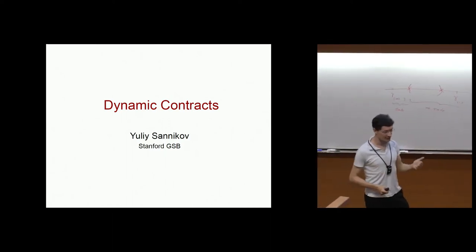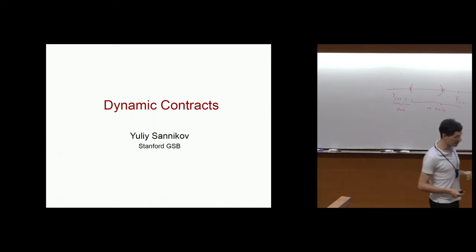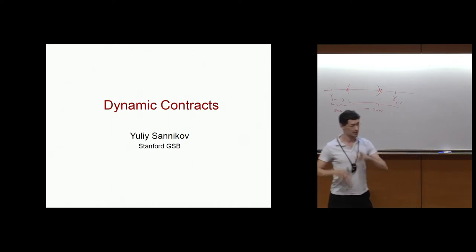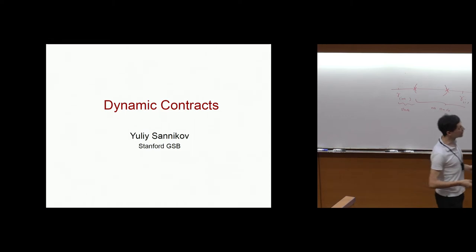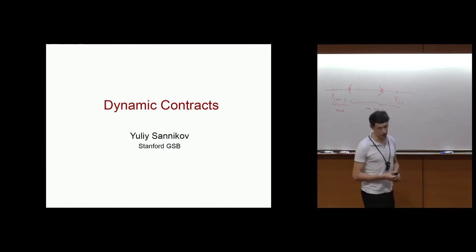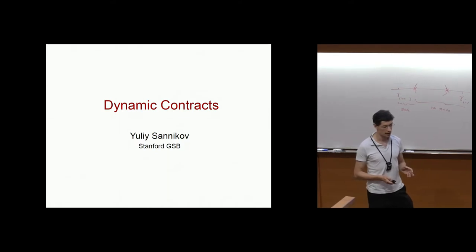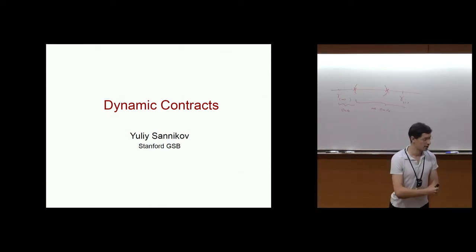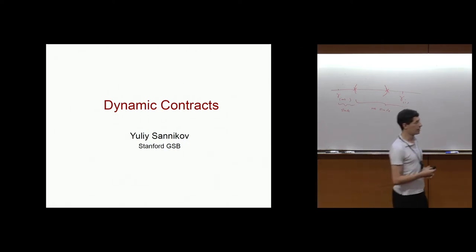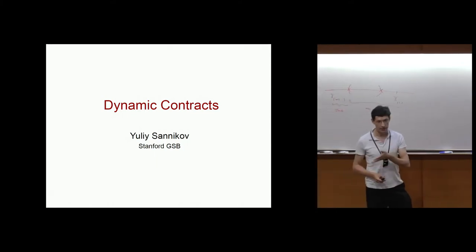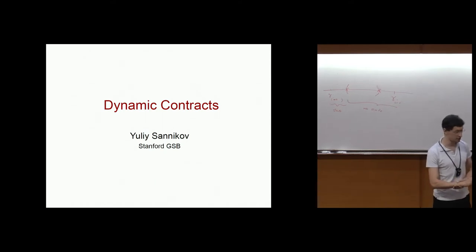This is a wonderful conference with a lot of really interesting talks. I should start by reminding you of some things from yesterday because there's a lot of interesting information. This talk is about dynamic contracts and the broad idea is dynamic adverse selection — situations where the agent has some private information. It could be that he comes to the principal already having private information, or acquires it over time, or creates it through actions unobserved by the principal.